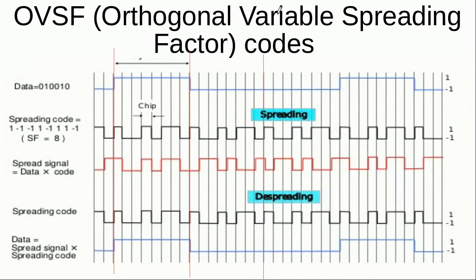The type of channelization codes used in 3G are known as Orthogonal Variable Spreading Factor, or OVSF codes. What is meant by orthogonal, and what is meant by variable spreading factor — we will talk about that later. First, we briefly touch upon the concept of spreading.